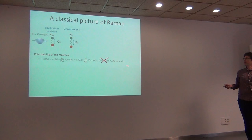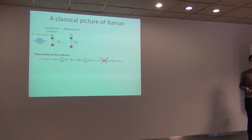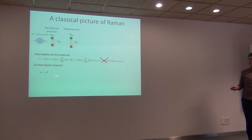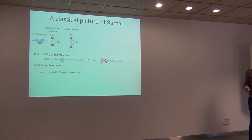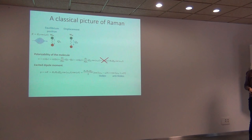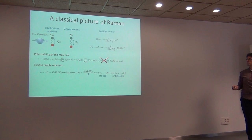In Raman, we don't care about the static polarizability; we care about the variation due to oscillations. Once we have that, we proceed exactly as with elastic scattering. The polarizability is proportional to the electric field, but now we have two cosine terms — one from the vibration and one from the light. Using standard trigonometry, we get two lines: one at minus and one at plus, giving the Stokes and anti-Stokes lines. This is the induced dipole moment; to get the emitted power, we use the standard equation for dipole emission from Jackson, and it's normally given as a cross section.